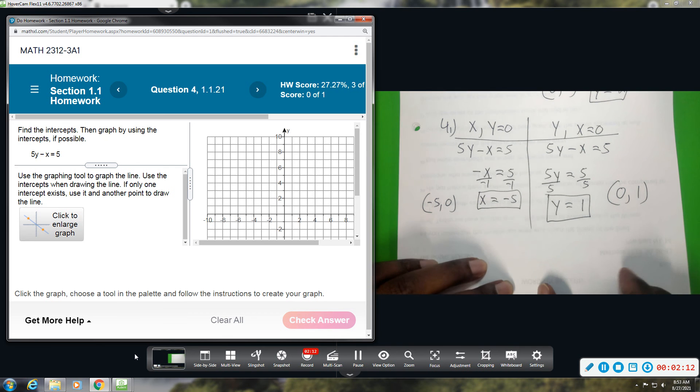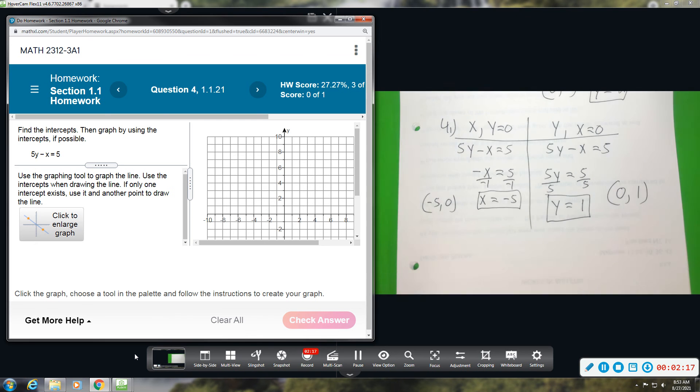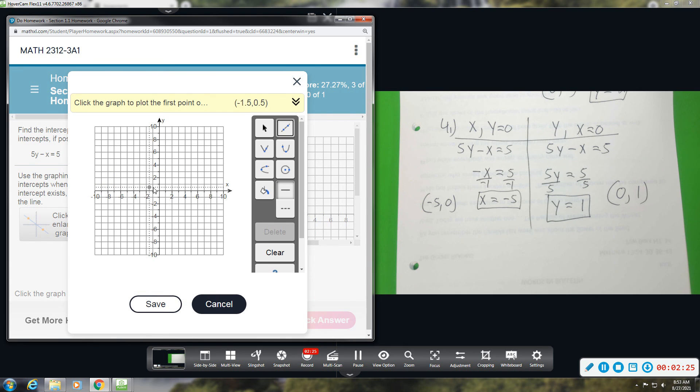Alright, so we're going to plot these two ordered pairs, and then graph our equation. So again, graph. These are linear. You've got to click that linear line, and then we're going to go to negative 5, 0, and then we're going to go to 0, 1.